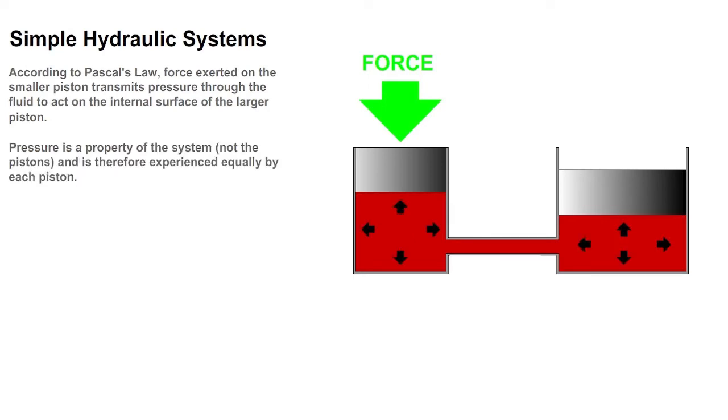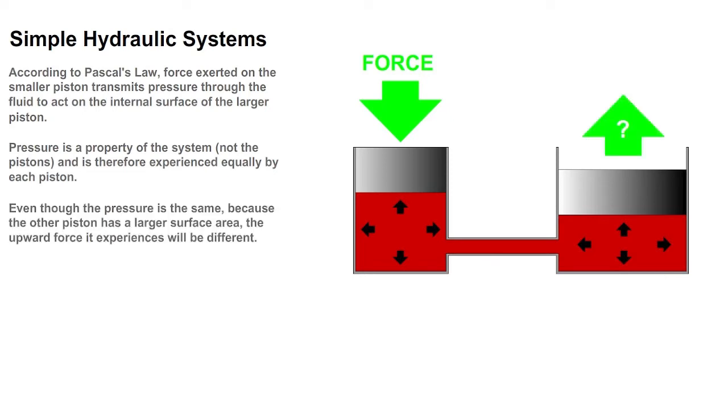It's important to remember, pressure is a property of the system, not the pistons, and is therefore experienced equally by each piston. Even though the pressure is the same, because the other piston has a larger surface area, the upward force it experiences will be different.